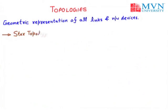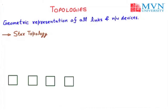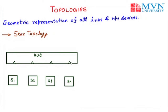Next is star topology. If multiple systems or workstations are connected to a single central point, it is called star topology. Taking four systems — S1, S2, S3, S4 — and a hub with four ports P1, P2, P3, P4: P1 connects to S1, P2 to S2, P3 to S3, and P4 to S4. There is only a central control point, and data is sent to multiple computers. It is point-to-point communication.